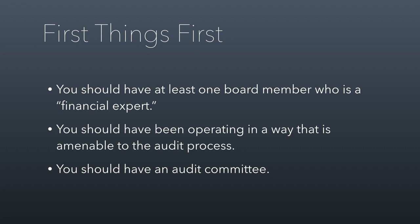There are some things you need to have in place first. You should make sure you have at least one board member who's a financial expert, like we talked about with the finance committee. You should have been operating in a way that's amenable to the audit process, which means good financial record keeping and using the financial controls we talked about in the previous part of this lecture. And finally, you should have an audit committee. The audit committee should be separate from the finance committee, though you should have some members on the audit committee who are not on the finance committee and vice versa.